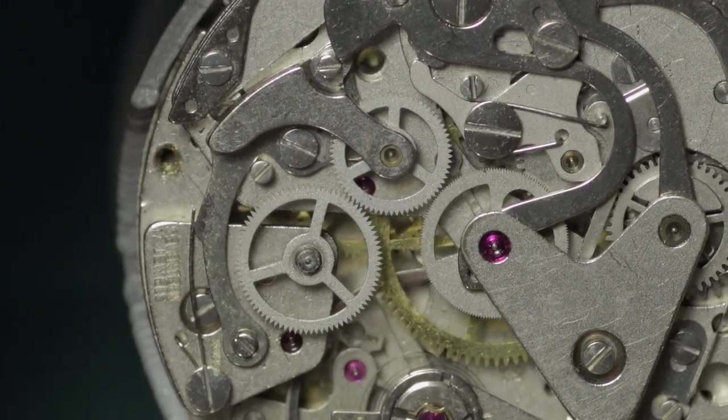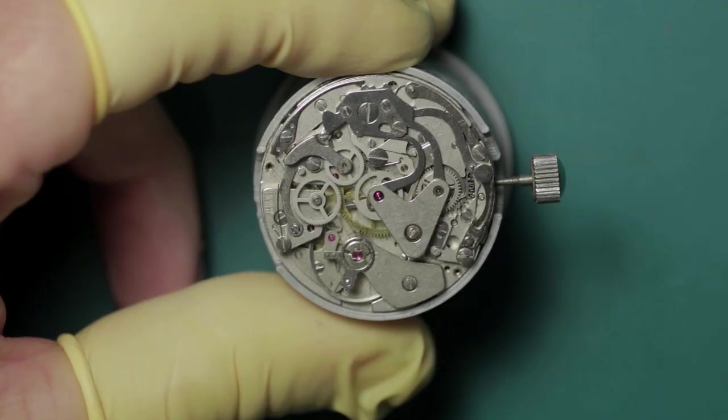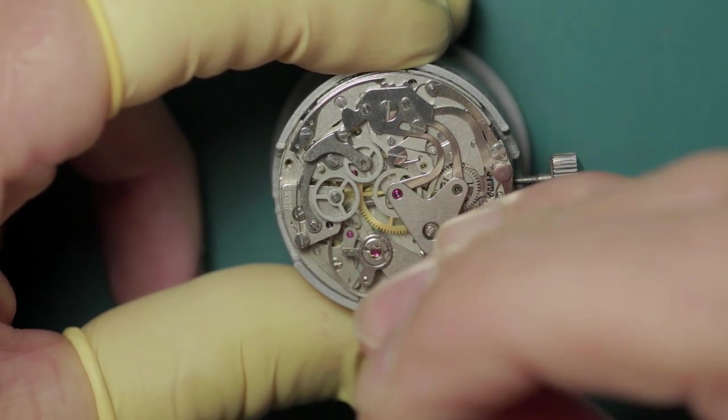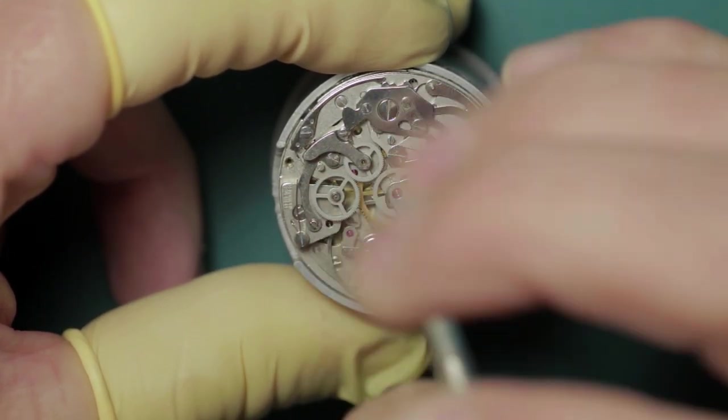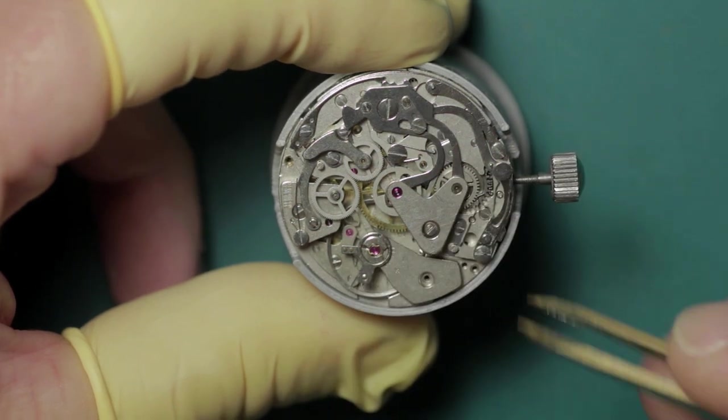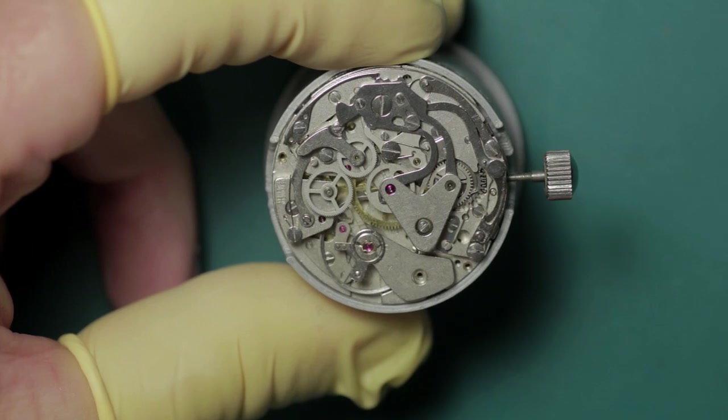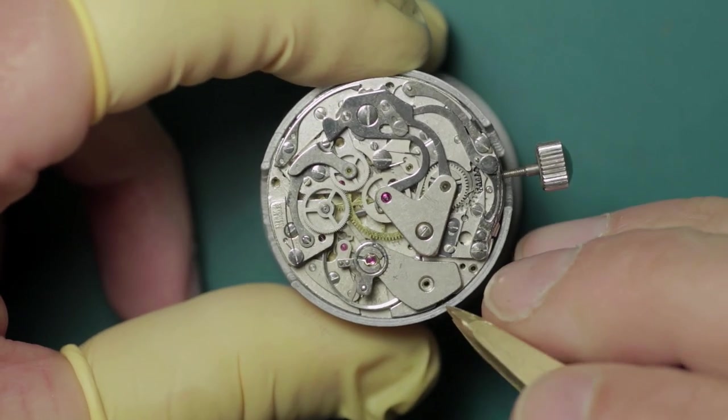We begin as ever by removing the balance cock and we get that out of the way because it is a fragile component. I like to get these out of the way as early as possible and put aside safely to prevent damage.